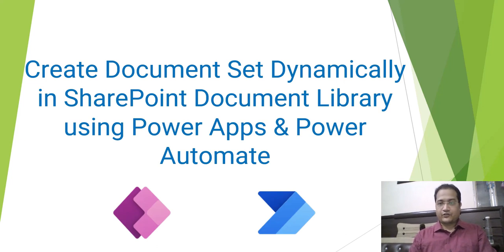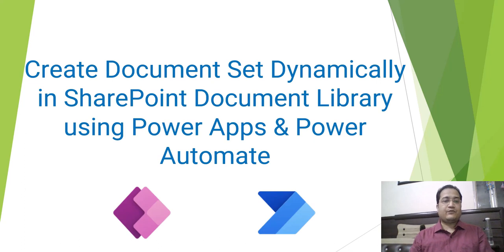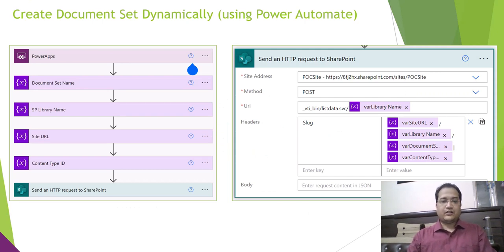So basically there will be a request form which the user will fill, and they can attach multiple documents while creating or submitting a new request. At that moment they also want to tag the documents with some particular metadata. That's why I used the architecture wherein the documents will be uploaded in a document set in the document library, and the request metadata or form metadata created in PowerApps will be saved in a separate SharePoint list. In this video I am going to show you how from PowerApps you can create the document set dynamically using PowerApps and Power Automate.